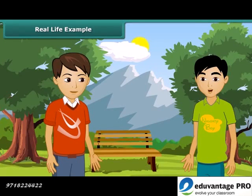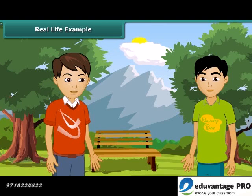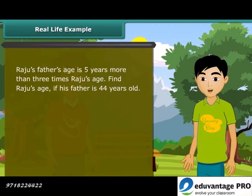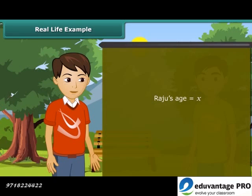Ajay, now you know how to solve equations. There is one problem for you. Raju's father's age is 5 years more than 3 times Raju's age. Now find Raju's age if his father is 44 years old. We have to find Raju's age. Therefore, we will take it as x.